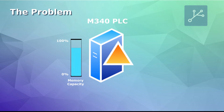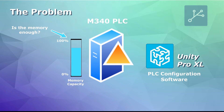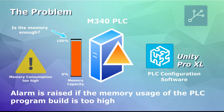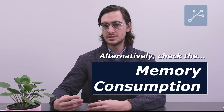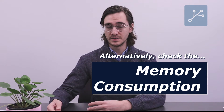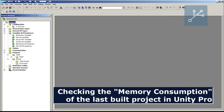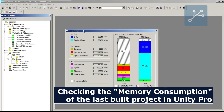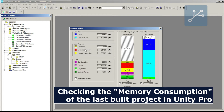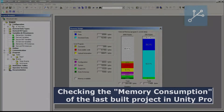Unity Pro will send an alarm if the memory usage is too high on the PLC, but before that we can check the memory usage by looking at the memory consumption from Unity Pro. This gives a report based on the last built project.